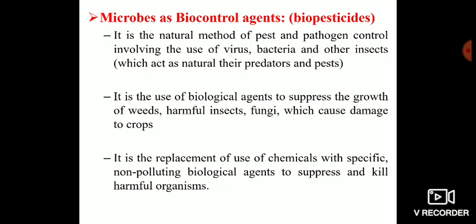Welcome back, dear students. Today our topic is the role of microbes as biocontrol agents or biopesticides. The first definition is: biopesticides are a natural method of pest and pathogen control involving the use of microbes like viruses and bacteria, as well as other insects which act as natural predators of the insects that destroy our crops.